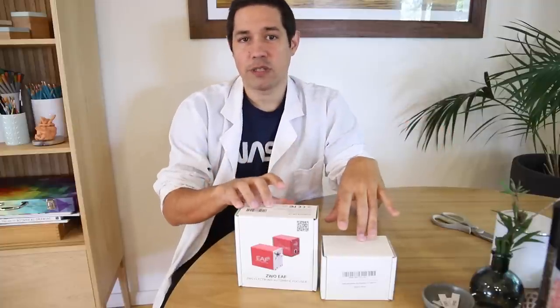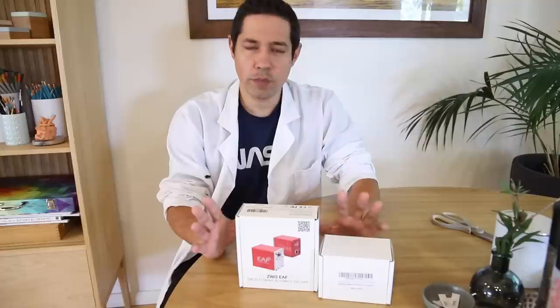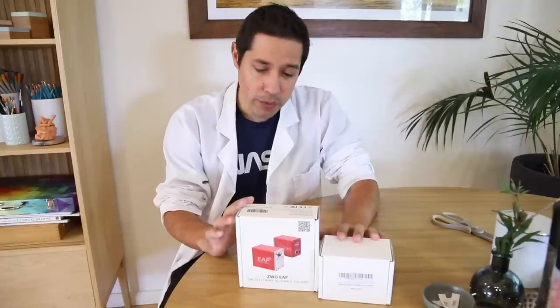And as you know on this channel I'm only going to use stuff that I actually like to use. So I'm going to step you through the process of putting it on the Rasa. It should just be a matter of taking off the stock focus knob and then putting all this together. Alright, let's do it. My name is Dylan O'Donnell and you're watching Star Stuff.